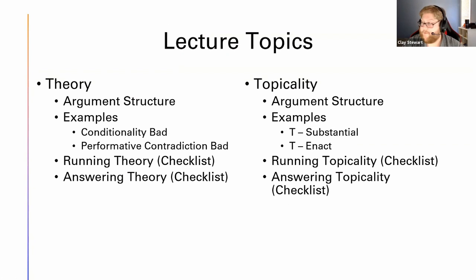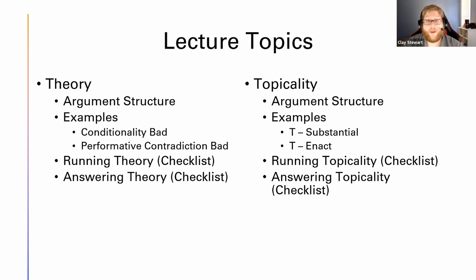Today's lecture topics: we're going to cover theory first. Theory is an argument that allows us to debate about what the rules for debate are. We'll go over the argument structure, some examples, and talk about how to run theory and how to answer it. We're also going to talk about topicality, which is a more specific type of theory argument run by the negative, which argues that the relationship between the affirmative and the resolution is illegitimate.